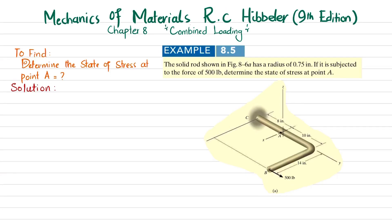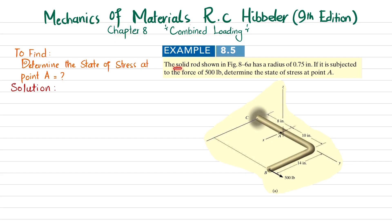In this video we are going to solve Example 8.5 taken from Chapter 8 on combined loading from the book Mechanics of Materials by RC Hibbeler, 9th edition. The problem states: the solid rod shown in Figure 8-6a has a radius of 0.75 inch. If it is subjected to a force of 500 pounds, determine the state of stress at point A.